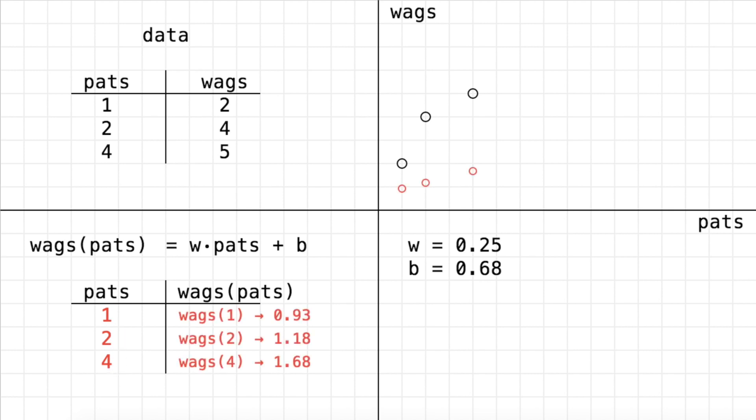Now, here we're actually making some predictions. So to do so, we're going to set pats equal to 1. So this pats has to be replaced with the number 1. W is equal to 0.25, so we have 1 times 0.25 plus 0.68. So that gets us to 0.93. So our model is predicting 0.93 wags for one pat.